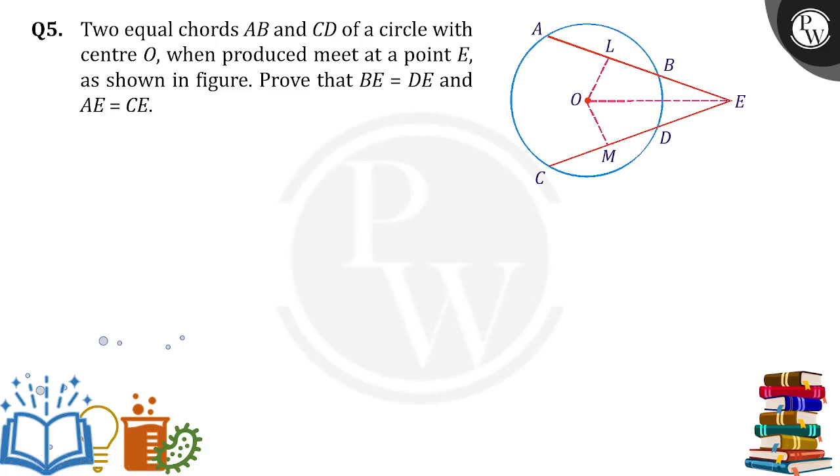Hello everyone. Two equal chords AB and CD of a circle with center O when produced meet at a point E, as shown in the figure. We need to prove that BE is equal to DE and AE is equal to CE.